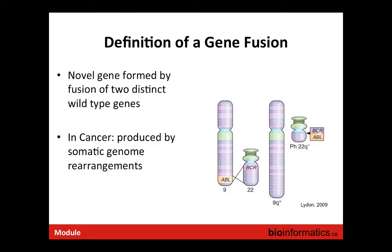Part two of this module is gene fusions — looking at how rearrangements affect the transcriptome. A gene fusion is defined as a novel gene formed by the fusion of two distinct wild-type genes. From a translocation or some other type of rearrangement event, two normally distinct genes are brought together, forming a gene that is a combination of the two.